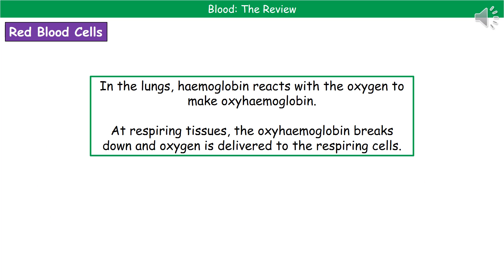When our red blood cells go towards the lungs and pass through the capillaries that surround the alveoli, the haemoglobin reacts with oxygen to make oxyhaemoglobin. Then when the blood is taken to respiring tissues, the oxyhaemoglobin breaks down, releasing that oxygen so it can be delivered to the respiring cells.